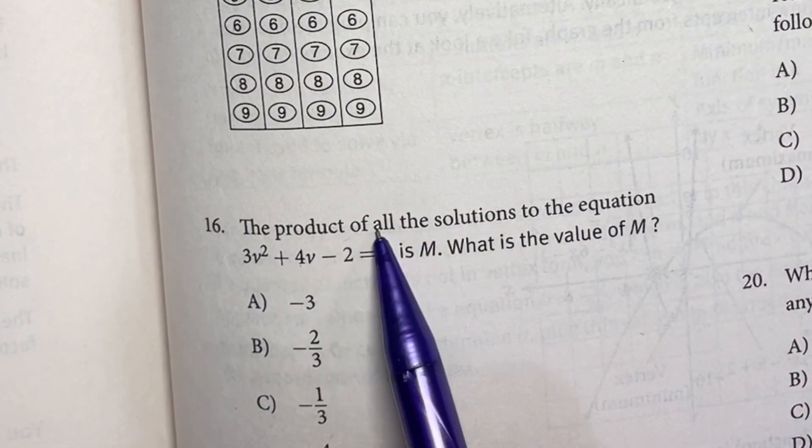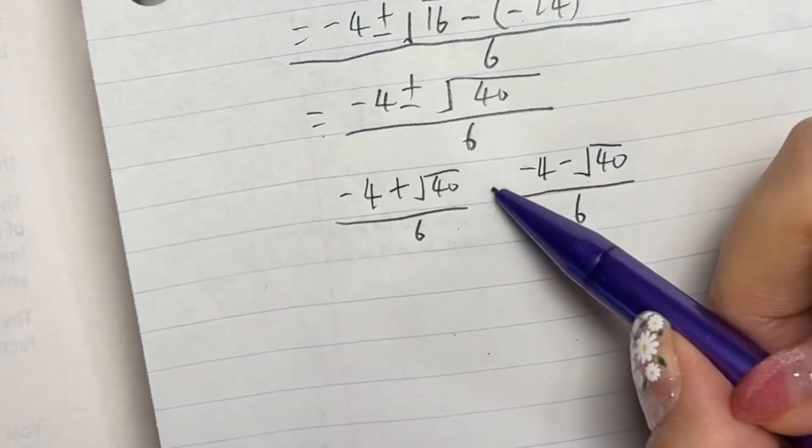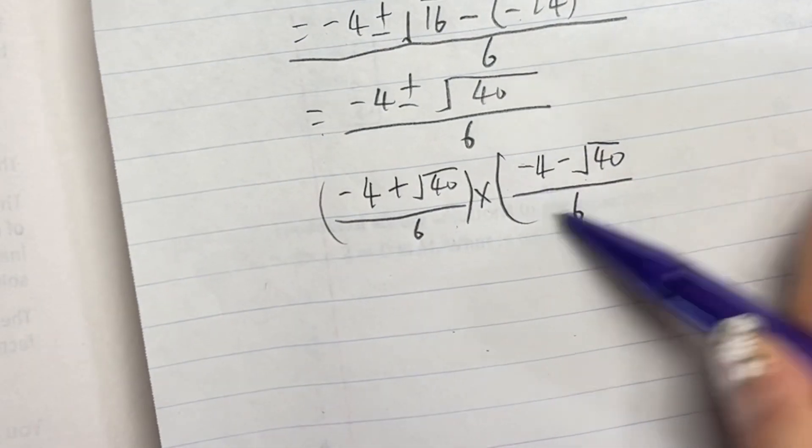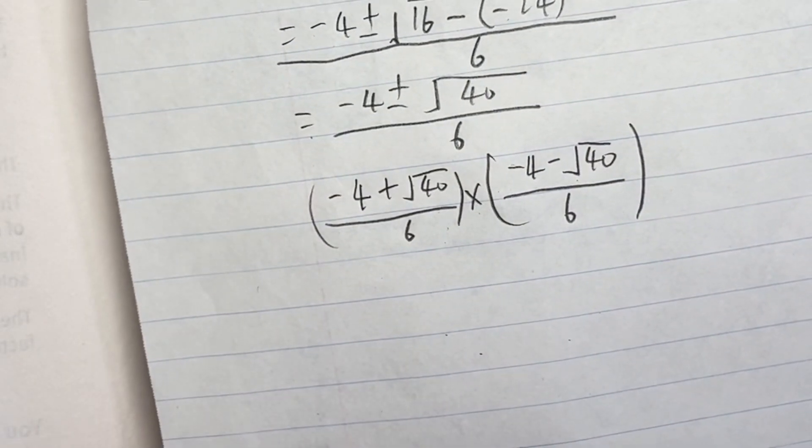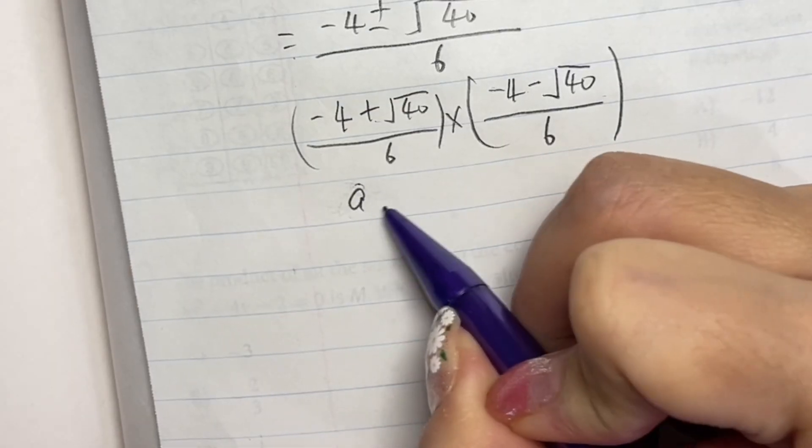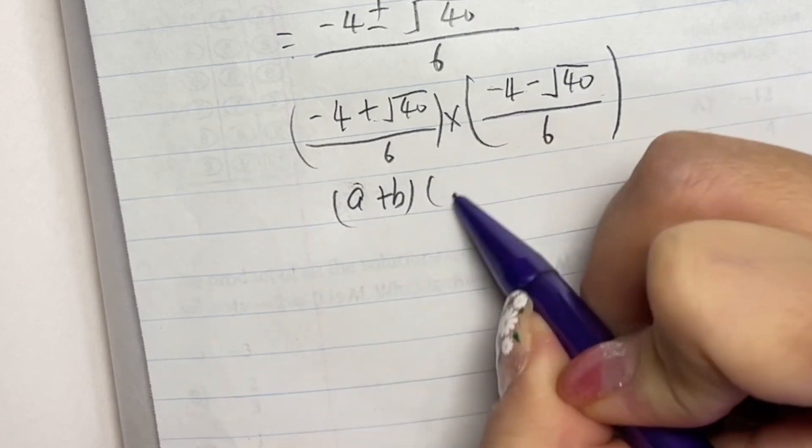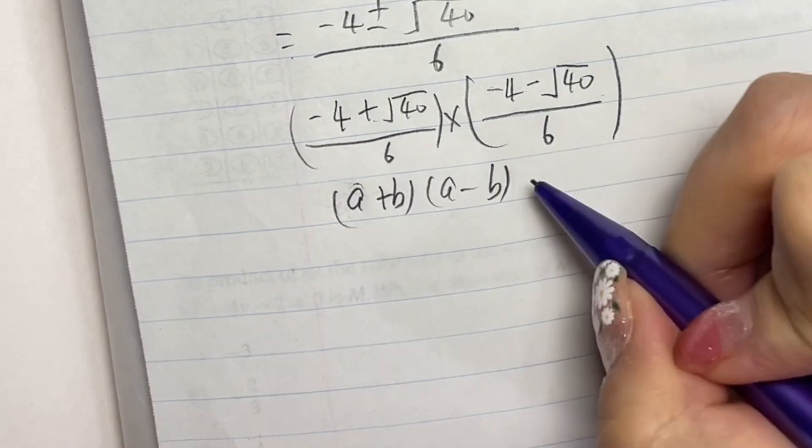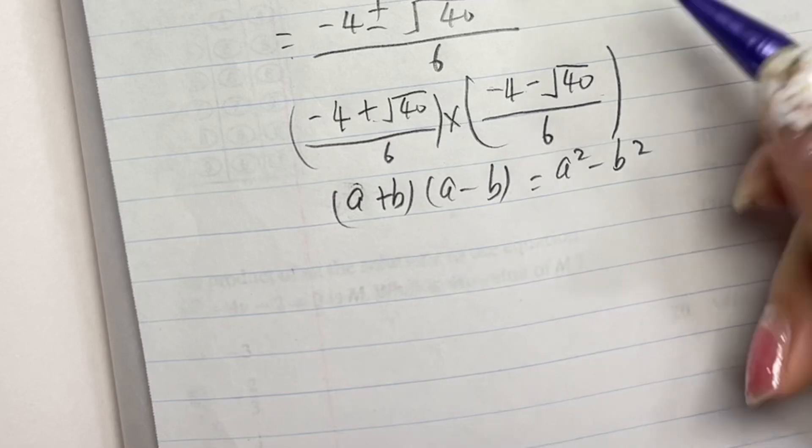The question asks the product of all solutions, so we multiply these two together. How to do this? This on the top, (a + b)(a - b) equals a² - b².